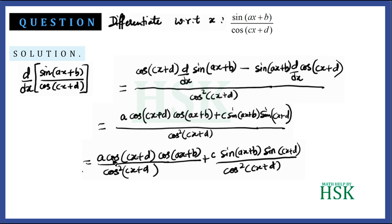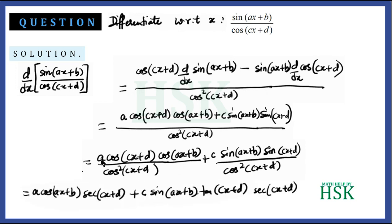In the first term, cos(cx + d) cancels with the square, leaving 1/cos(cx + d) written as sec(cx + d). In the second term, sin(cx + d)/cos(cx + d) is written as tan(cx + d), and the remaining 1/cos(cx + d) is written as sec(cx + d). So the final answer is: a·cos(ax + b)·sec(cx + d) + c·sin(ax + b)·tan(cx + d)·sec(cx + d).